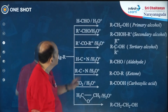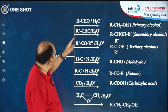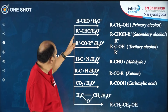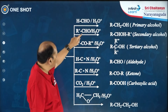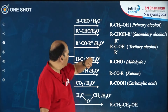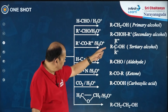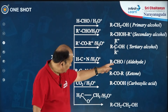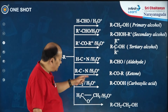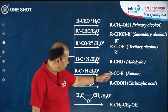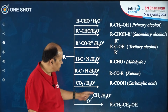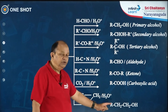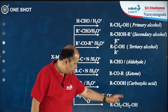Some more reactions: Grignard reagent reacting with formaldehyde will give primary alcohol; with any other aldehyde you will get secondary alcohol; with ketone, tertiary alcohol; with HCN aldehyde; with alkyl cyanides or nitriles you will get ketone; with carbon dioxide, carboxylic acid; and with epoxide you are going to get the primary alcohol.